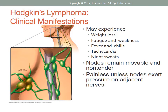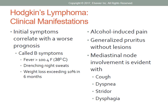The enlarged nodes remain movable, non-tender, and painless unless pressure is exerted on adjacent nerves. The patient may experience weight loss, fatigue and weakness, fever and chills, tachycardia, and night sweats. A group of initial findings including fever in excess of 100.4°F, drenching night sweats, and weight loss exceeding 10% in six months are termed B symptoms and correlate with a worse prognosis. After the ingestion of a small amount of alcohol, individuals with Hodgkin's lymphoma may complain of a rapid onset of pain at the site of the disease. The cause of the alcohol-induced pain is unknown.